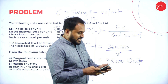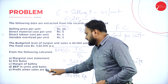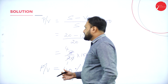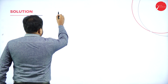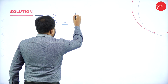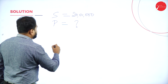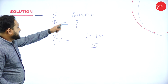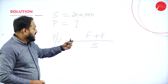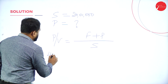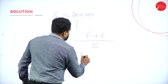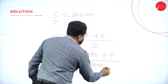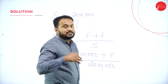Next: profit when sales are ₹20 lakhs. Use the formula: PV = (F + P) / S. So 40% = (₹3,60,000 + P) / ₹20,00,000. Cross-multiply to find profit P. That is how you solve for profit when a new sales figure is given.